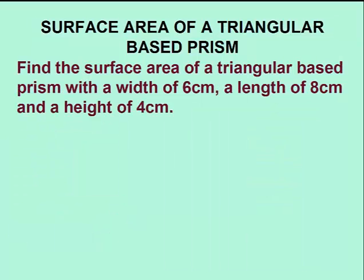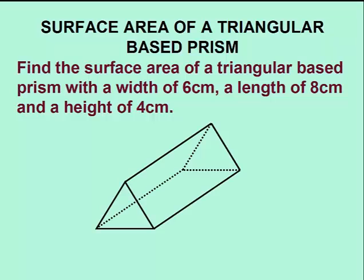Next, we'll find the surface area of a triangular base prism, having a width of 6 centimeters, a length of 8 centimeters, and a height of 4 centimeters. To construct this triangular base prism, we'll start with two triangles and then connect the vertices with lines. We'll put in our dimensions.